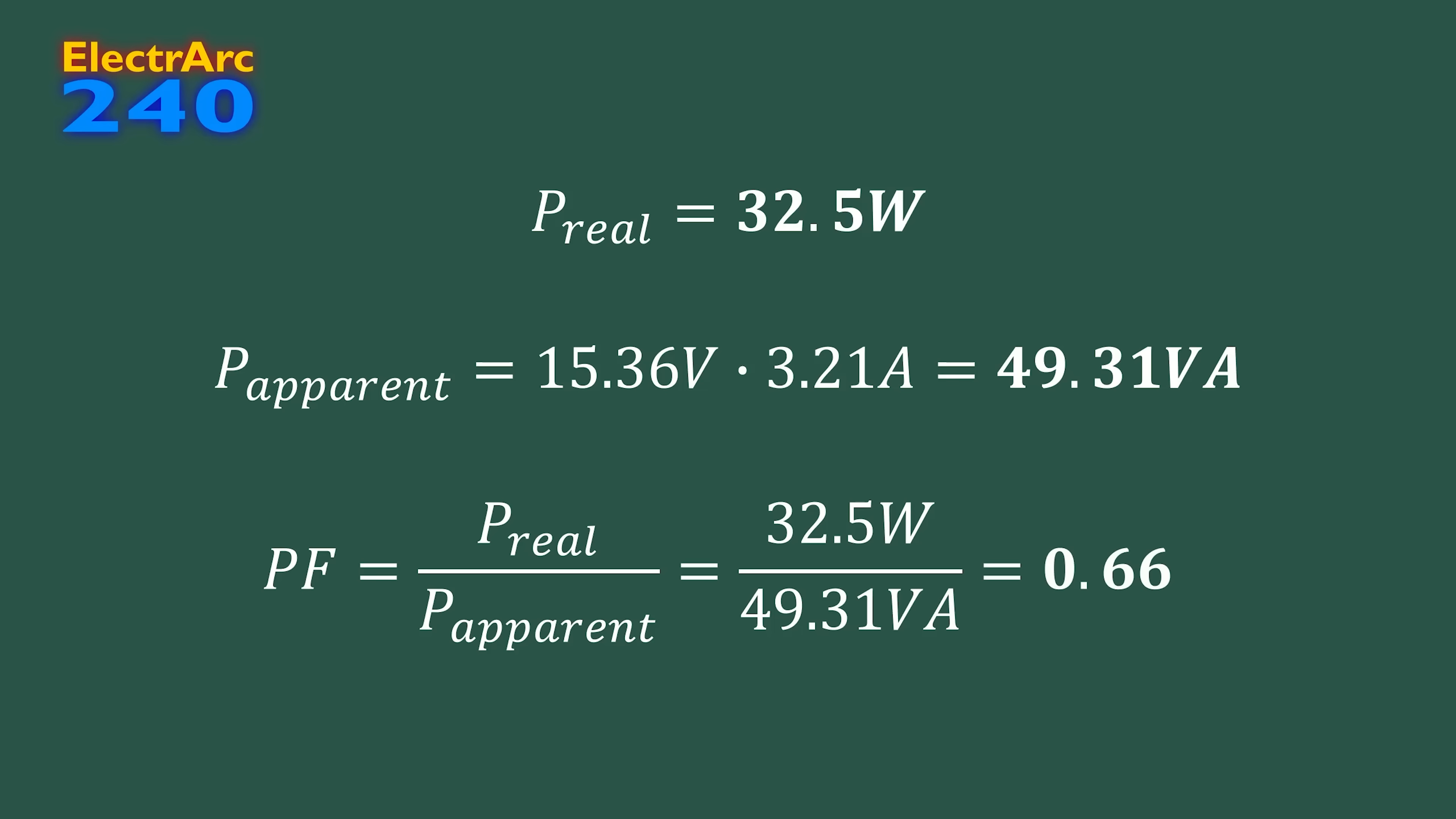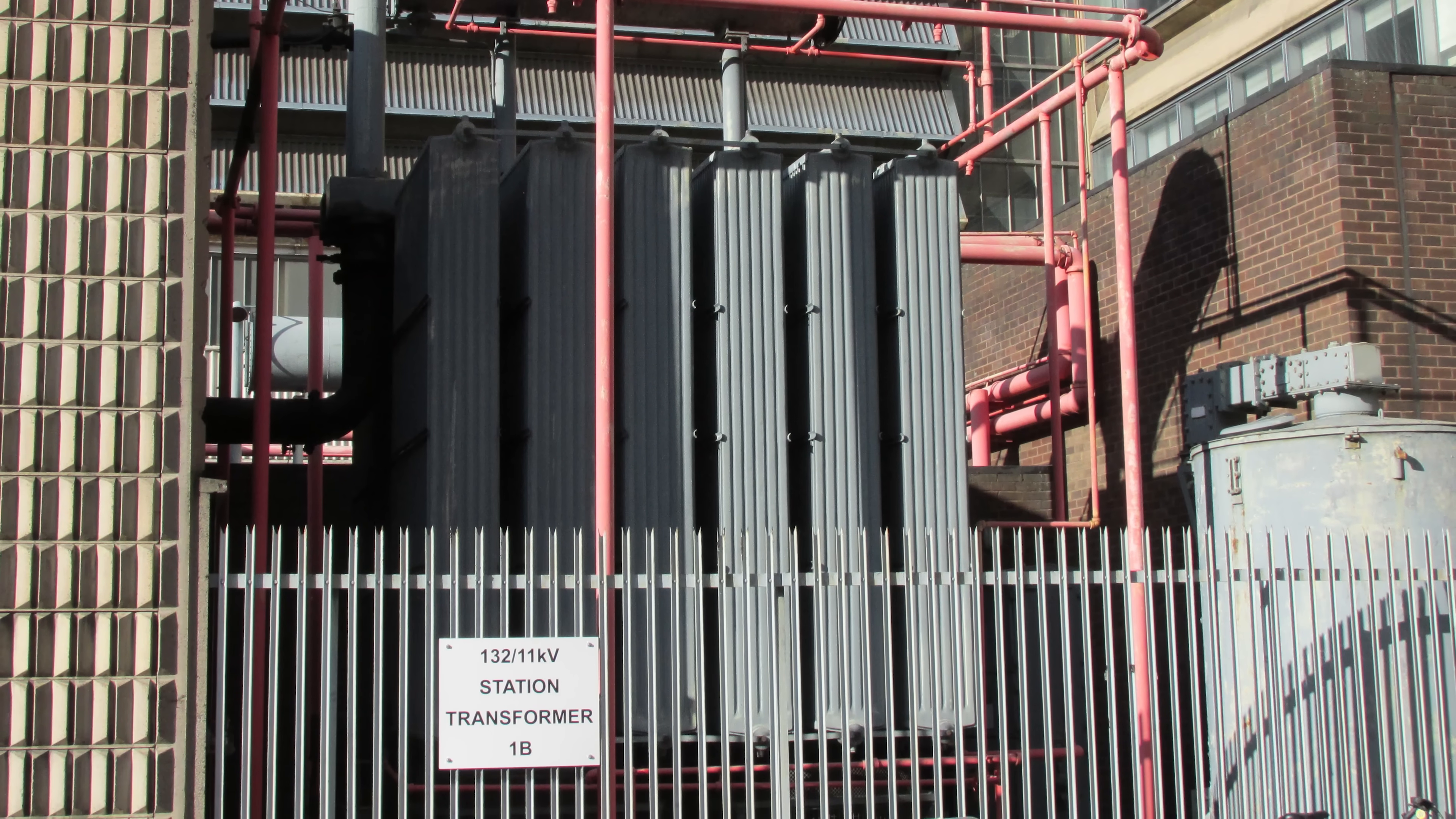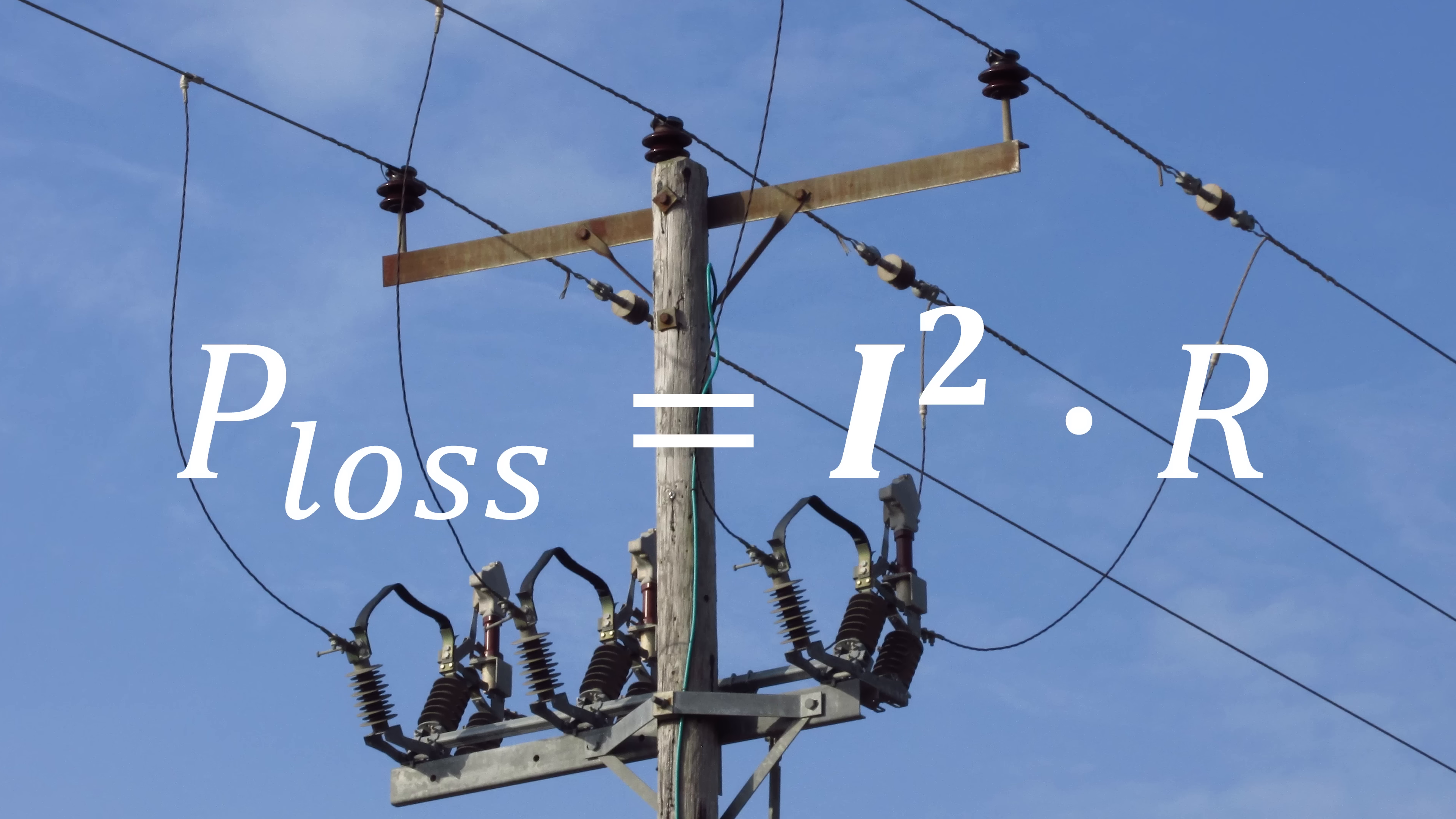Low power factor is a problem, because it means the RMS current draw of a device is more than it needs to be. For example if I have a 240 watt laptop charger, and I'm running it from 240 volt mains, then it should draw 1 amp, but if it has a power factor of a half, then it's actually going to draw double that, 2 amps. That puts a lot of unnecessary strain on the grid, as the resistive losses in transformers and transmission lines are proportional to the square of the current, so will be 4 times higher than they need to be.